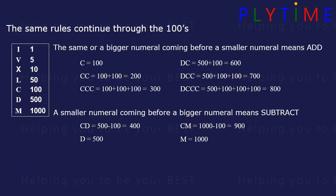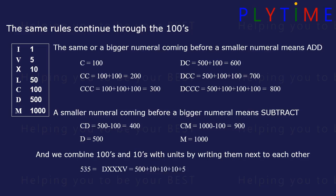We combine hundreds, tens, and units by writing them next to each other. 535 would be D (500), then XXX for 30 and V for 5. For 469, the 400 is CD (500 minus 100). The 69 is LX, and the 9 is IX (10 minus 1).